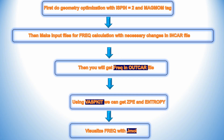First, you need to do geometry optimization with ISPIN=2 and the corresponding MAGMOM tag. Then make the input file for frequency calculations with necessary changes in the INCAR file — this is very important. You will get the frequency in the OUTCAR file, and using VASPkit you can get zero point energy and entropy.